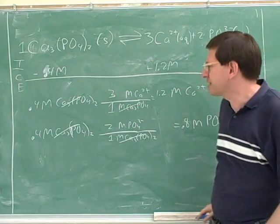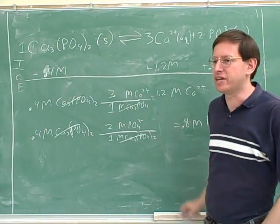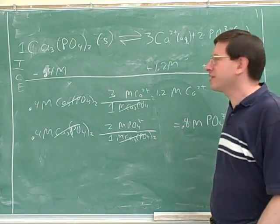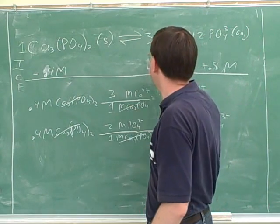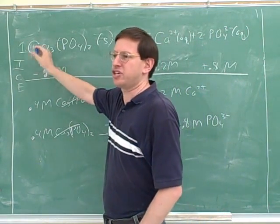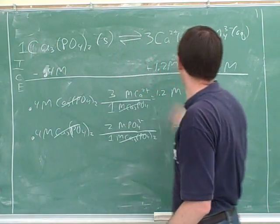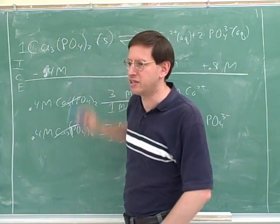I don't think you should have to do these by unit conversion every time. You should just be able to say it's obvious that this change should be three times bigger than this change, and it's obvious that this change should be twice as big as this one.